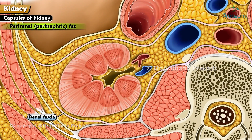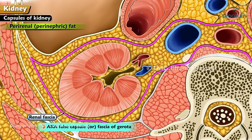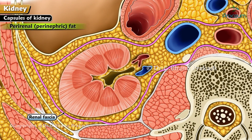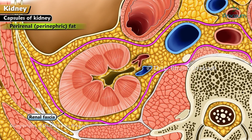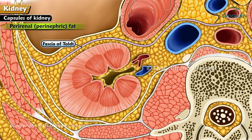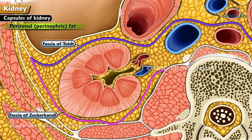Renal fascia, also known as the false capsule or fascia of Gerota, is a fibroareolar sheath surrounding the kidney and perirenal fat. It has two layers: the fascia of Toldt — an ill-defined anterior layer — and the fascia of Zuckerkandl — a well-defined posterior layer.